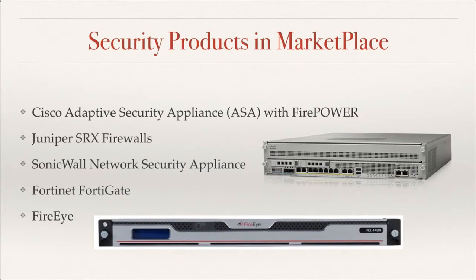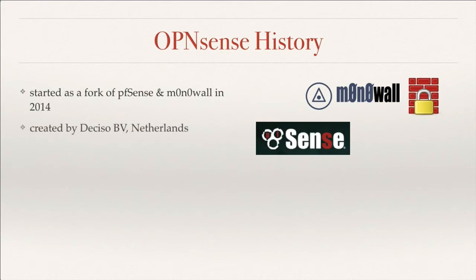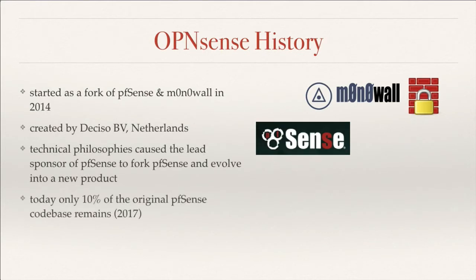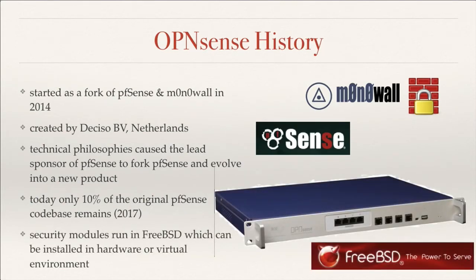Some of these devices can cost several tens of thousands of dollars. For our course, we're going to look at an open source product called OPNsense. This product has evolved from previous products called PFSense and Monowall, and is the product of a company from the Netherlands. While it can be installed in an appliance box, it's also available as a software product that can be downloaded and installed on any general purpose PC.